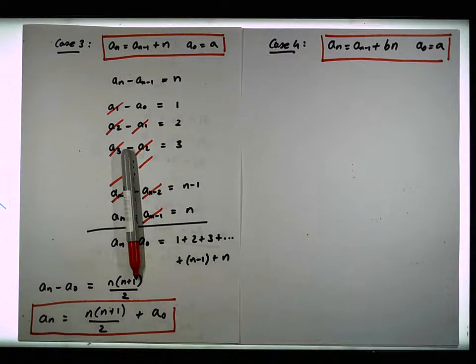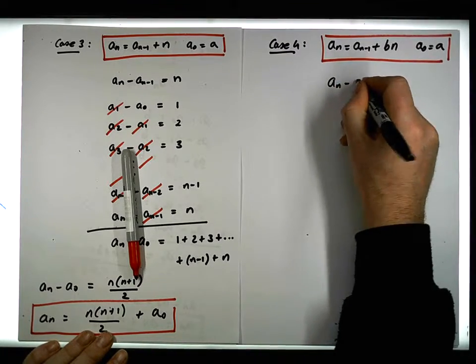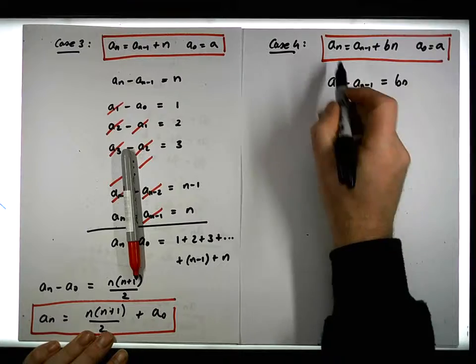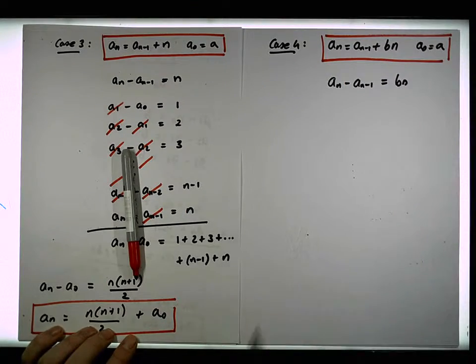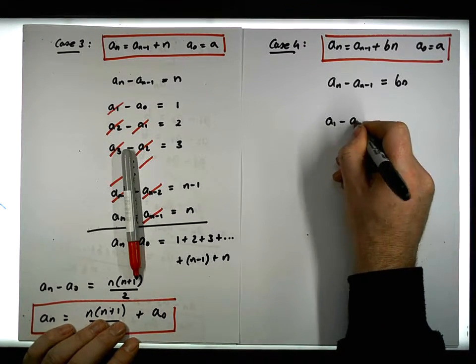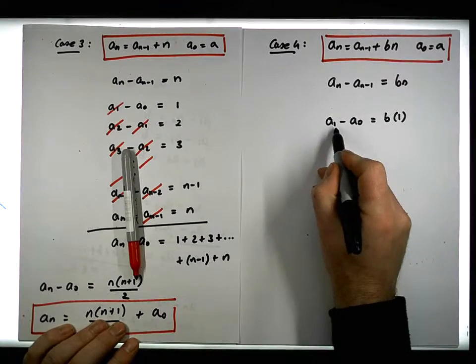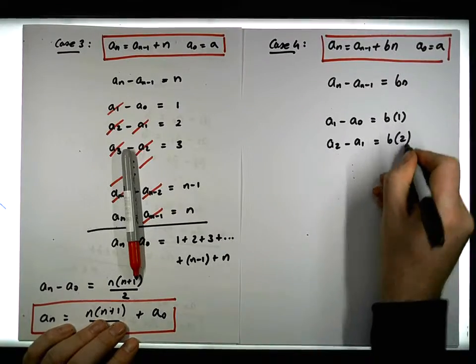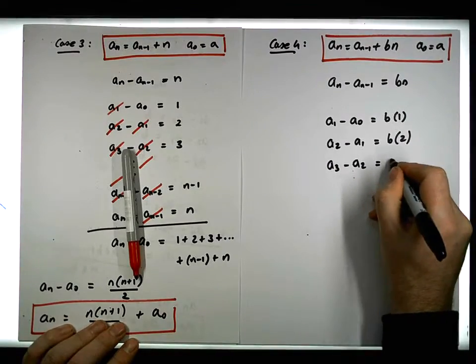Once again, the differences are defined to be an minus an minus 1 must be equal to bn. We get that from here—bringing the an minus 1 across. Now if we iterate through these differences, we end up with a1 minus a0 must be equal to b times 1, a2 minus a1 must be equal to b times 2, and a3 minus a2 must be equal to b times 3.